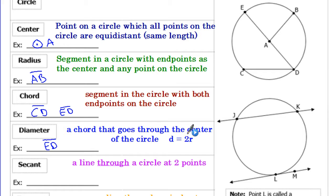If you have a chord that goes through the center of the circle, that is referred to as a diameter. So even though ED is a chord, more specifically it is a diameter. The formula for diameter is just equal to two times the radius.